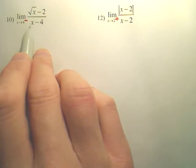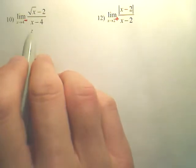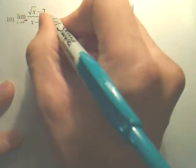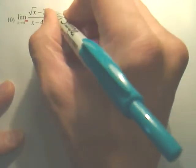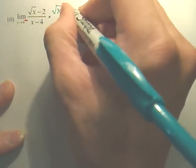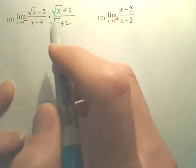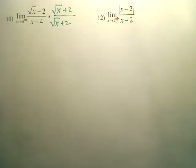So, first of all, plug in 4. Nope, problem, 0 on the bottom. Okay, do the limit. Now, whenever you have the square root on top, you could do something where you multiply by the conjugate. That's a minus, it's a plus. And this is a quick little method to get a removable discontinuity.